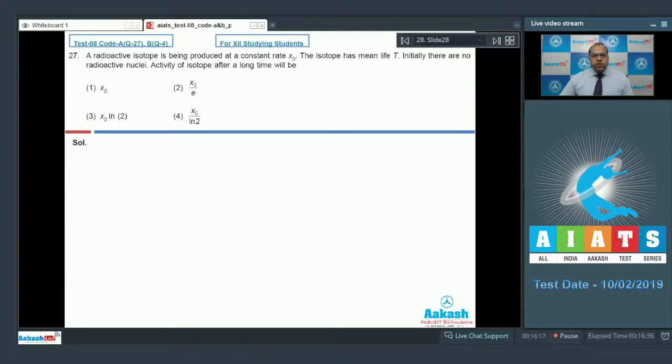So it is given in the equation, at T equal to 0, the number of radioactive nuclei is 0. Then at any time T, dn by dt can be written as X0, that is the rate of formation, minus lambda into n, that is the rate of decay.